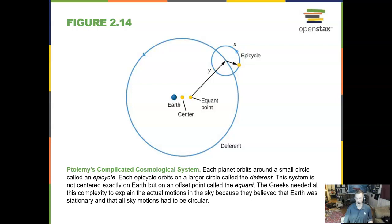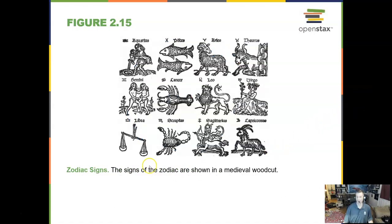The first one was by a Greek philosopher named Ptolemy. Ptolemy, that P is silent. And Ptolemy said that the planets orbit around a small circle called an epicycle. Each epicycle orbits a larger circle called the deferent. And it's not completely centered on the Earth, but offset aways. But it does have, and this is critical, the Earth at the center.